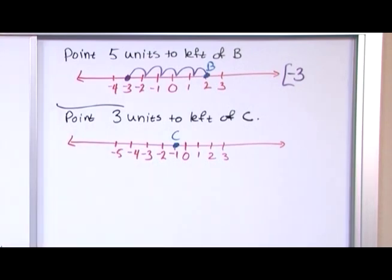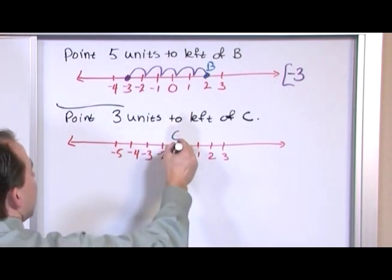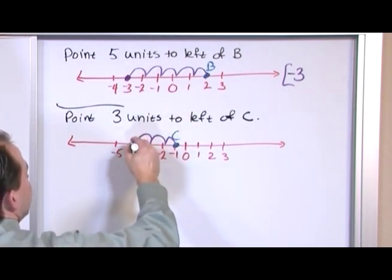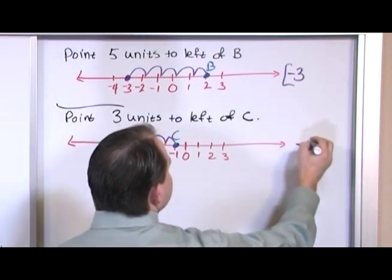Now let's say point C is located right here at negative one. So the question is what point is three units to the left of the point that we've labeled here? So you start at the point you have and you go three units. One, two, three, and you've landed on negative four. So that's the answer.